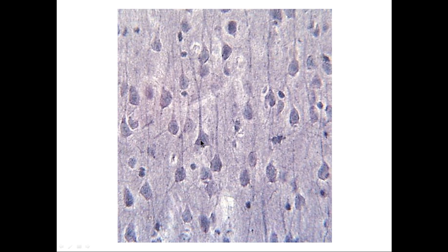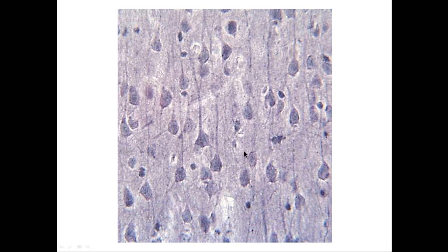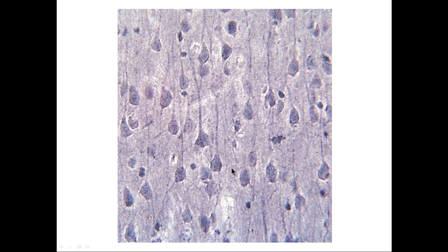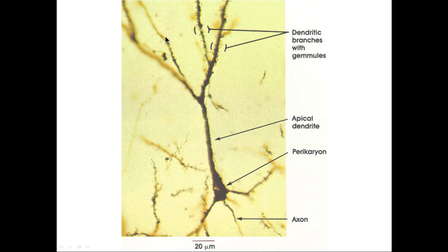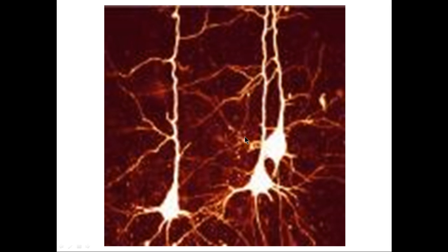Here we're back to the pyramidal cells in area 4 of the motor cortex — the upper motor neurons. These cells have a large apical dendrite and a very small axon. In this Golgi stain, you can see the apical dendrite and the tiny axon — remember, that axon is over three feet long, running from the cerebral cortex down to the sacral spinal cord. In this horseradish peroxidase stain, the pyramidal cells are lit up showing the apical dendrites and the tiny axon, with a characteristic pyramidal or triangular shape.